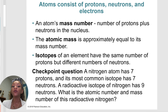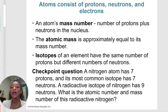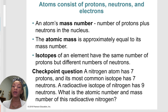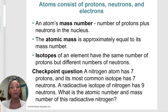But a radioactive isotope of nitrogen has nine neutrons, so we add those seven protons plus nine neutrons to get a slightly different mass number. All the elements on the periodic table are compiled by averaging across different isotopes, and that average is the number you'll see on the periodic table.